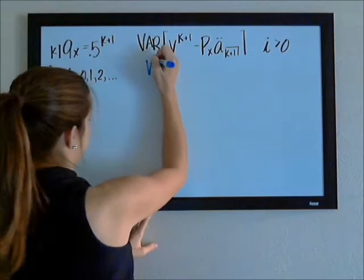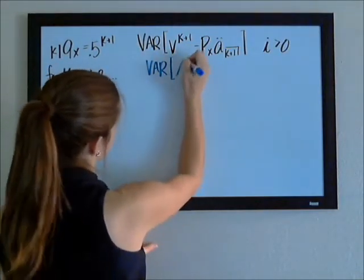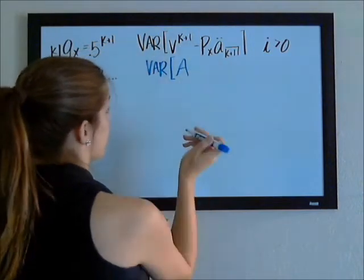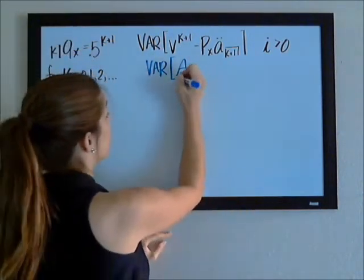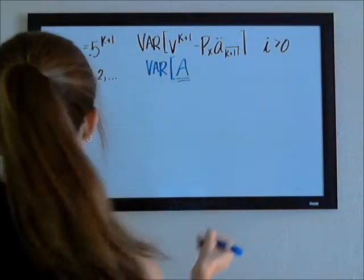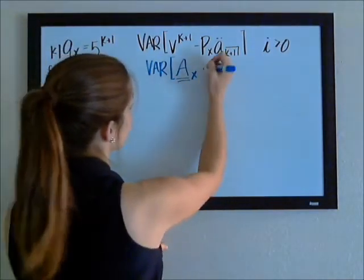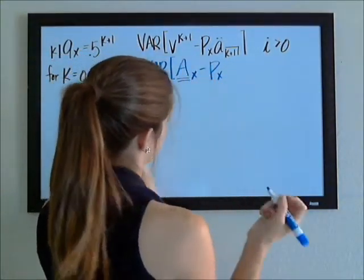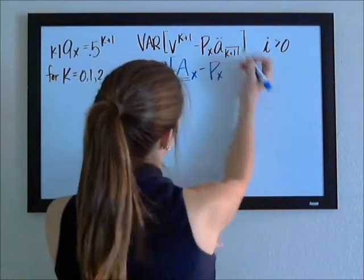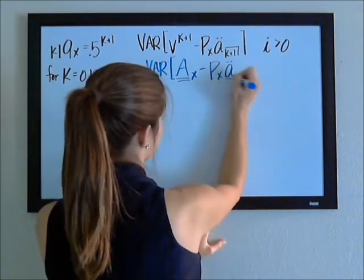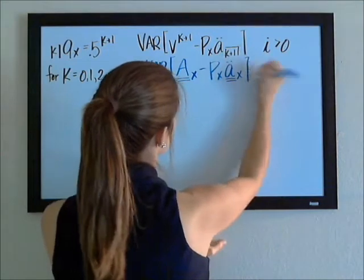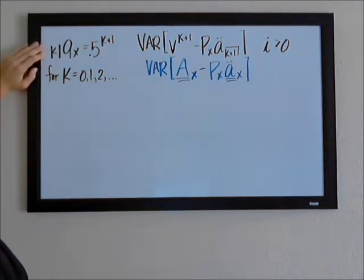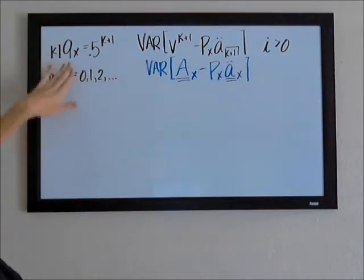So I'm going to rewrite this before we do anything. It's easier for me to see what's going on if I write this in terms of insurances. So this v to the k plus 1 is the same thing as the true present value of a whole life insurance payable at the end of the year of death, and it looks here like we're working with an x-year-old, less the amount of the premiums that we bring in. So they denote the premium here as px times the true present value of our annuity on x.